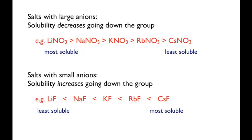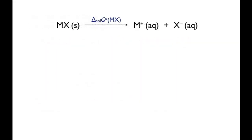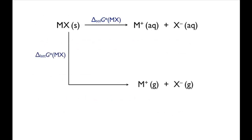In this screencast we'll look at the factors involved in this. Drawing an energy cycle, we can break down the energy of solvation into two steps. In the first step, we dissociate the ionic solid into gaseous ions — this is the lattice energy. In the second step, we convert the gaseous ions into hydrated ions. These are the hydration energies for the two ions.